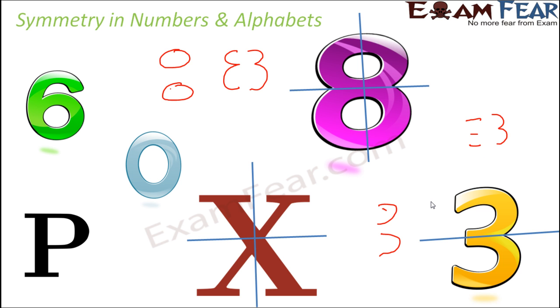Now let's look at a few more numbers and alphabets like 6, O, and P. I would want you to try these out by yourselves — figure out how many lines of symmetry each of these alphabets and numbers have.